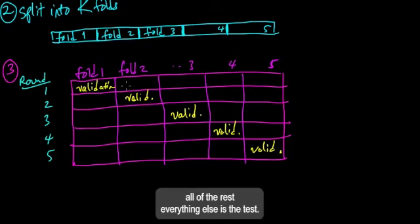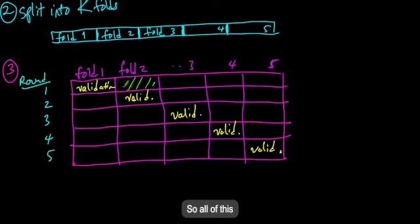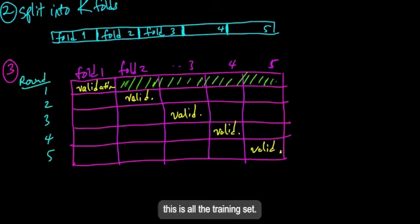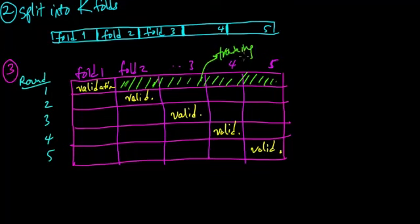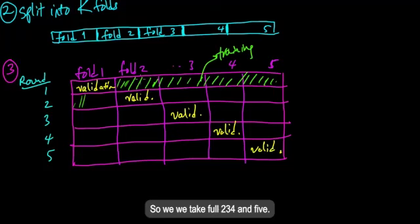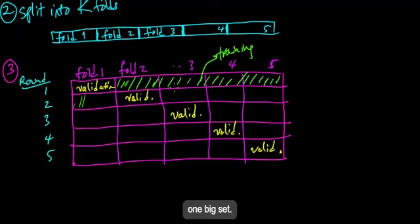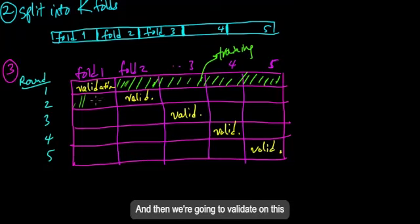And now, remember before, for validation, we had our training set and our validation set. And now, on each of these rounds, there will be a different fold for the validation set. So in the first round, fold one is the validation set. In the second round, fold two is the validation set. In the third round, fold three is the validation set. And then four for four, and five for five, validation set. And for fold one, all of the rest, everything else is the training set. So fold two, three, four, and five is all the training set.